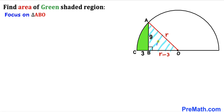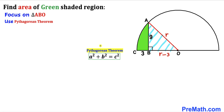Let's focus on right triangle ABO whose side lengths are 9, r, and r minus 3. We'll use the Pythagorean theorem: A squared plus B squared equals C squared. Calling AO the hypotenuse, we get r minus 3 whole squared plus 9 squared equals r squared.